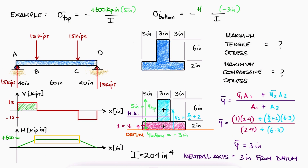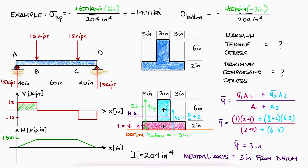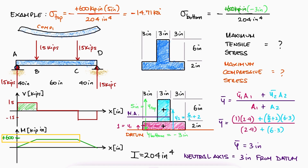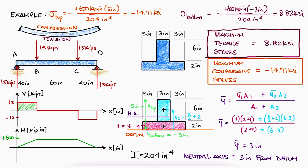If we substitute a positive moment and I — which is always positive — the y distance to the top from the neutral axis, which is also positive, will give us a negative stress equal to minus 14.71 ksi. This makes sense because for a positive moment like this, the top surface is under compression. With the same values, only this time y being the distance from the neutral axis to the bottom — meaning a negative value — sigma is equal to positive 8.82 ksi. And again, it makes sense: the bottom is under tension. For more examples and the other main videos from the Mechanics of Materials course, please check the links in the description below.